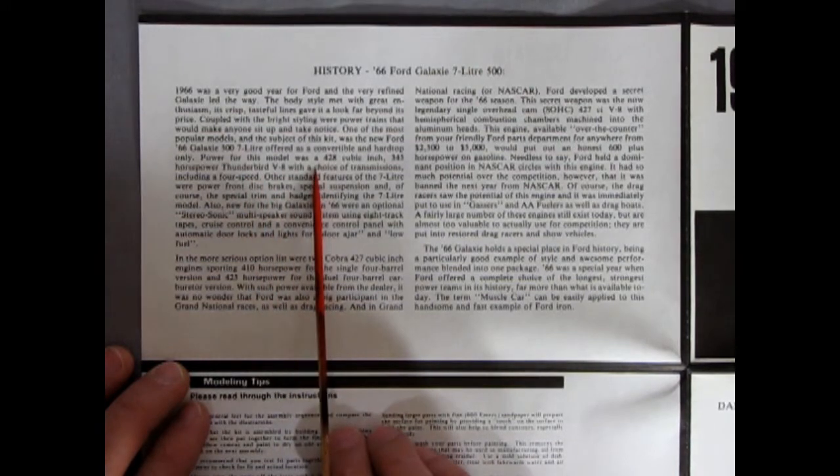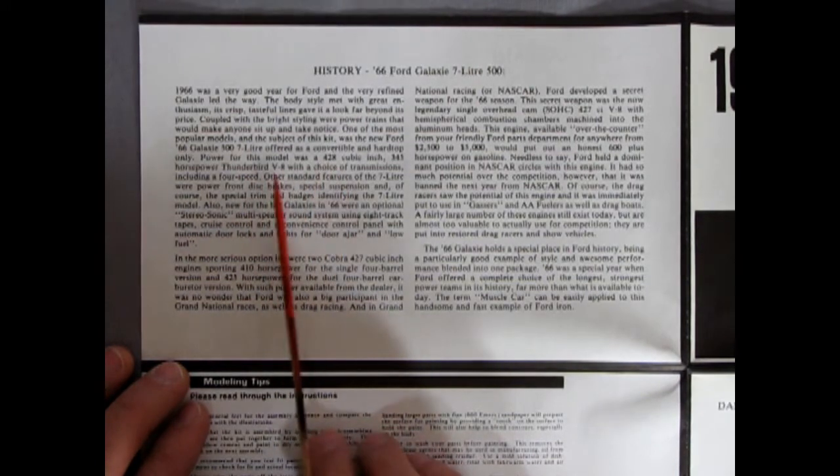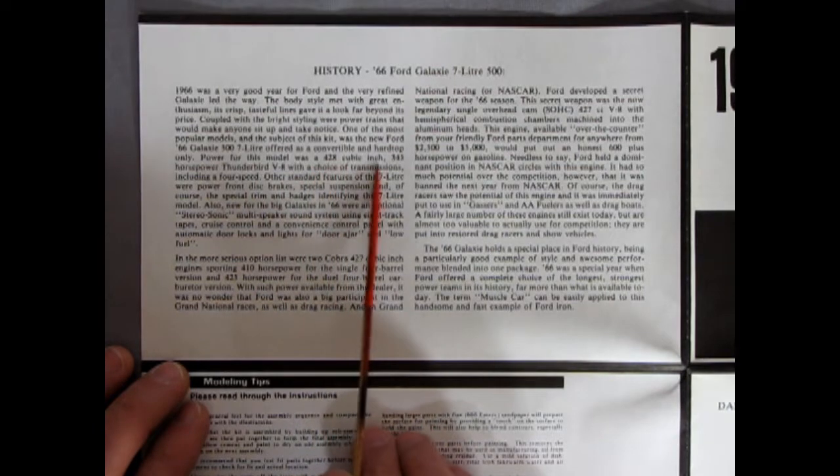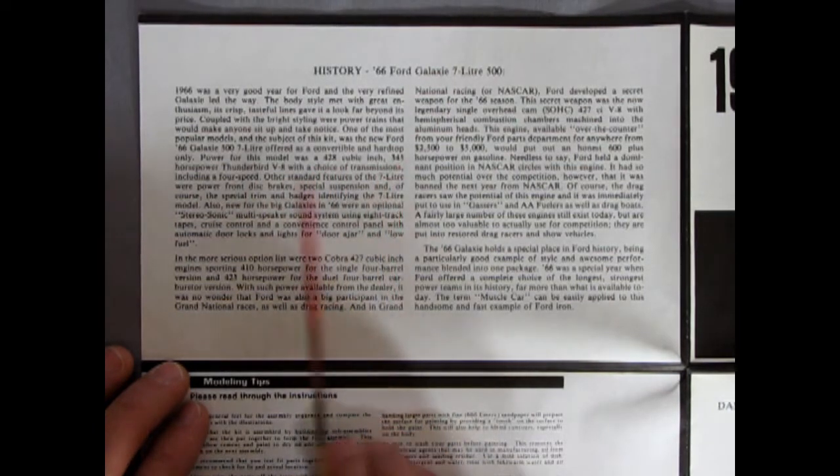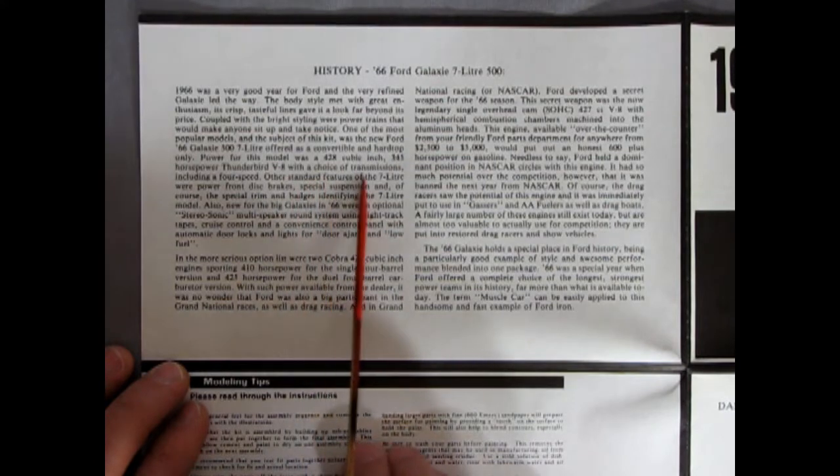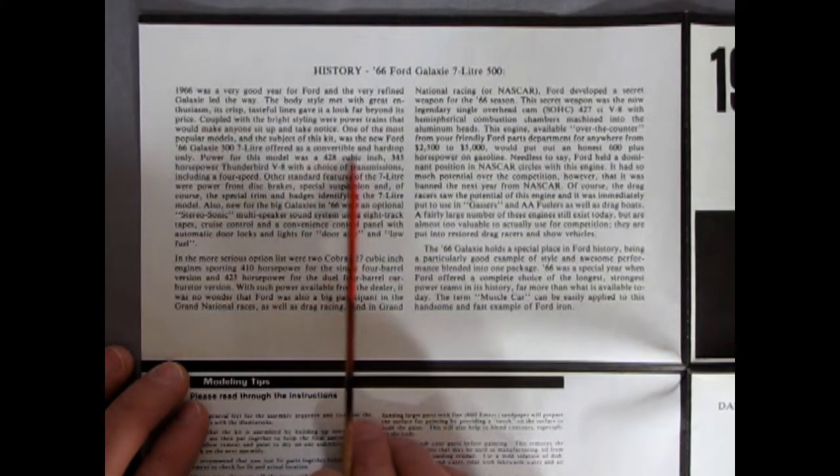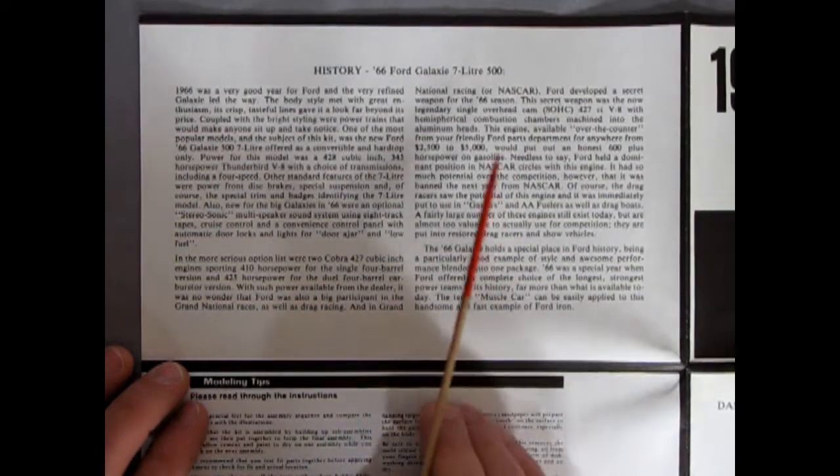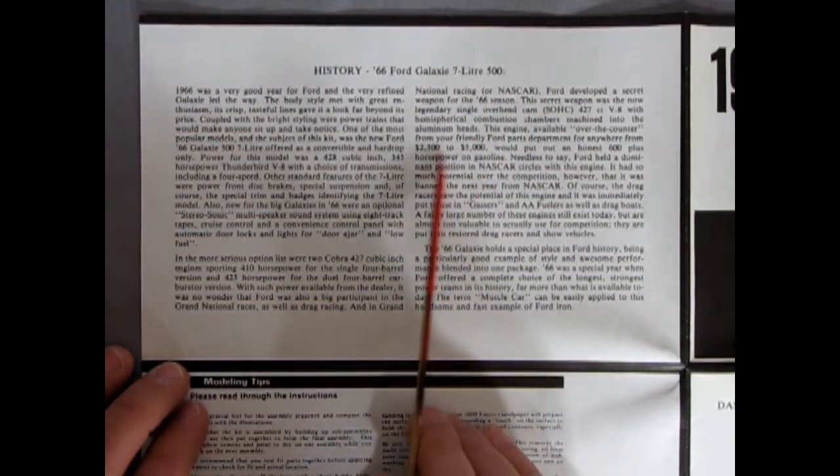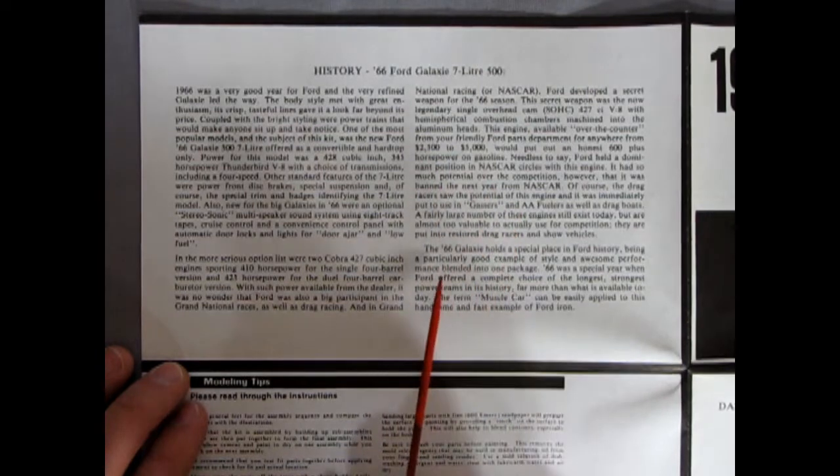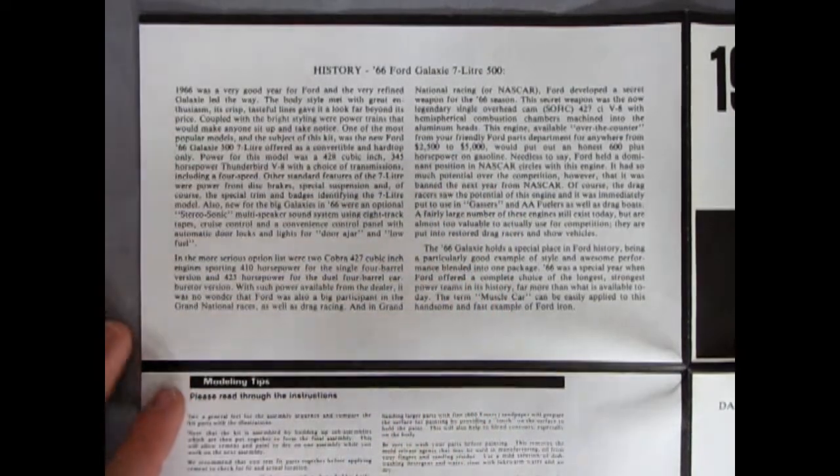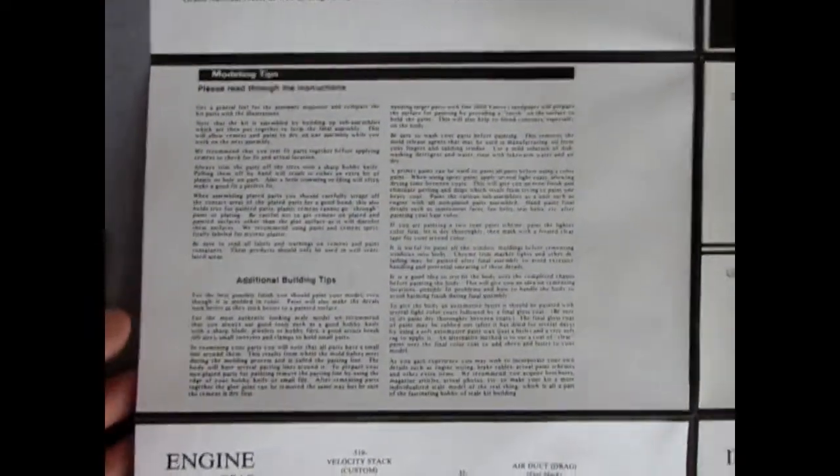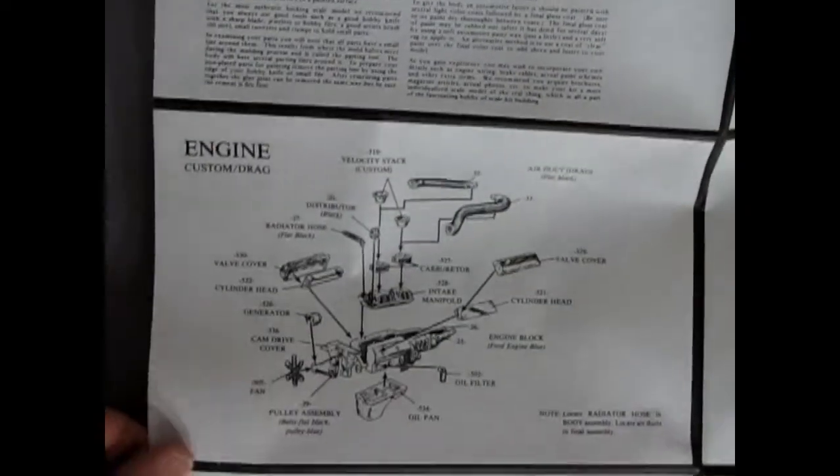Power for this model was a 428 cubic inch 345 horsepower Thunderbird V8 with a choice of transmissions. It talks about AC Cobra 427 cubic inch engines, how it ended up in NASCAR, the price for putting one together for NASCAR, and all kinds of other cool things. You get this panel with modeling tips.